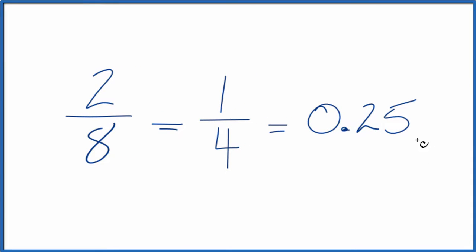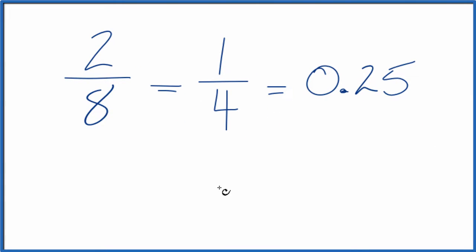We could also do this longhand. We have 2 divided by 8. So we could put 2, and we could divide that by 8. 8 doesn't go into 2. Let's call it 20, and then put 0 point up here.